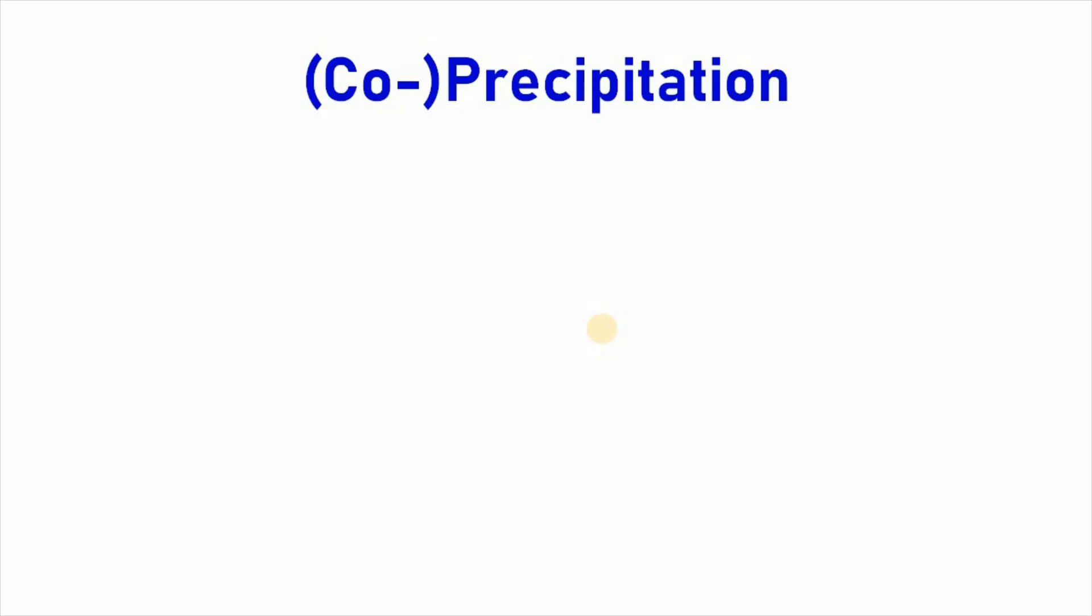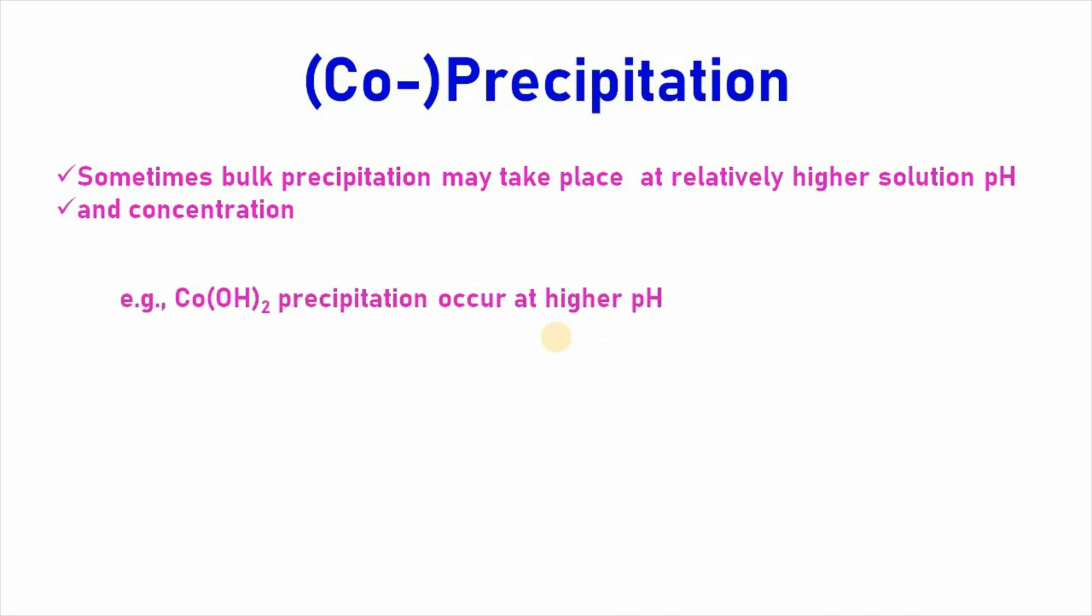Then precipitation or co-precipitation. Sometimes, bulk precipitation may take place at relatively higher solution pH and concentration. For example, cobalt hydroxide precipitation occur at higher pH values.